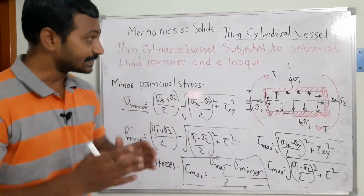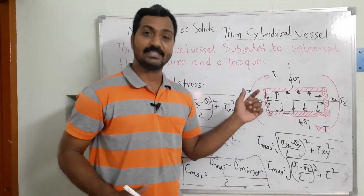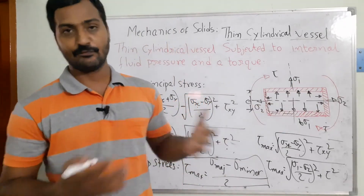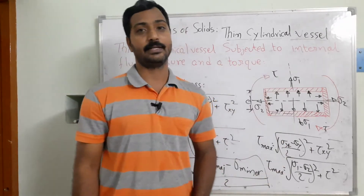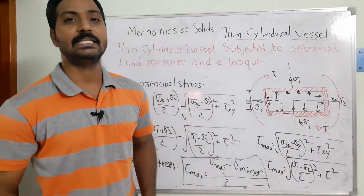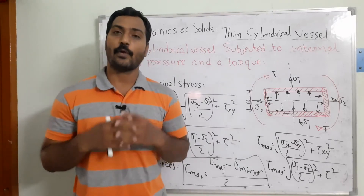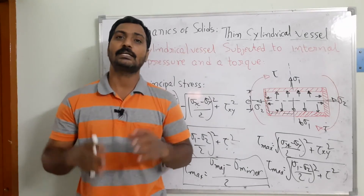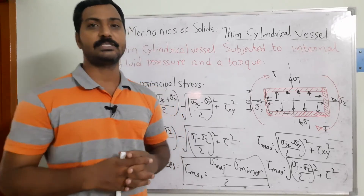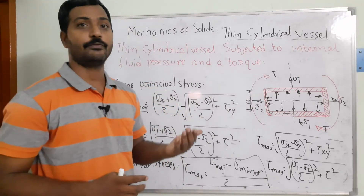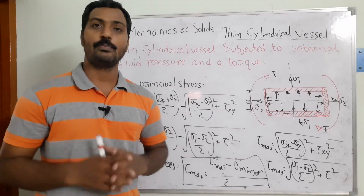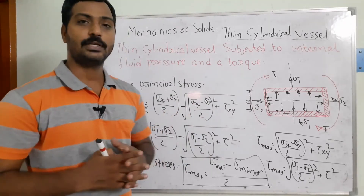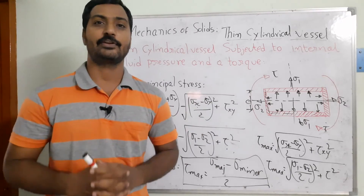This approach lets us analyze pressure vessels subjected to circumferential stress σ1, longitudinal stress σ2, and torque simultaneously. A common real-world application is torque converters used for mixing cement and granules in construction. Using these equations, we can design such vessels accordingly. I hope you understand the concepts — if you have any difficulty, please put it in the comment section and I will reach out to you. Thank you.